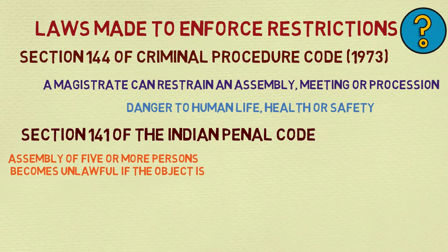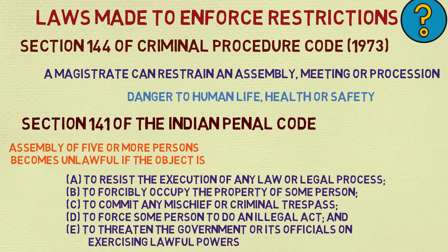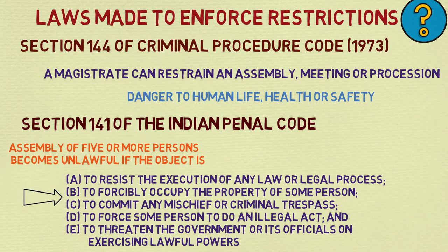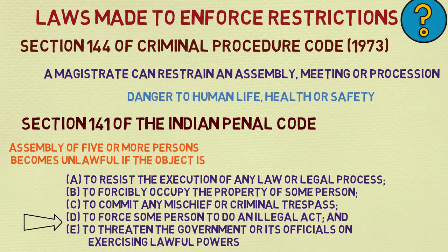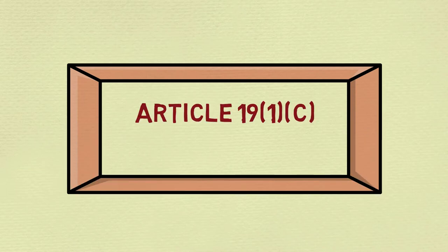Under Section 141 IPC, an assembly becomes unlawful if the objective is to resist the execution of any law or legal process, to forcibly occupy the property of some person, to commit any mischief or criminal trespass, to force some person to do an illegal act, or to threaten the government or its officials in exercising lawful powers.